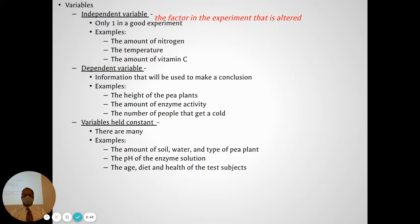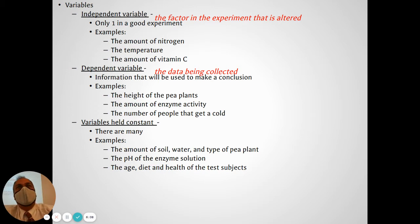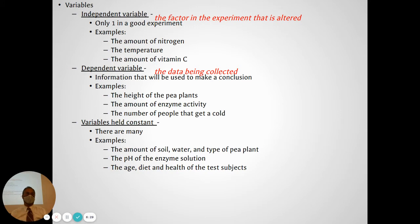The dependent variable is the one you're exploring — the data you're collecting to see how it's going to change. I usually say the 'D' in dependent goes with the data — it's the data you're collecting at the end of your experiment. In the pea plants, it was the height of the pea plant — that's the data I was going to collect. How fast the enzyme is working, or how many people got a cold — those are the data I would collect to make my conclusion.